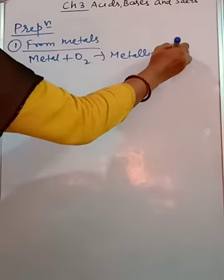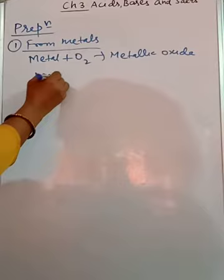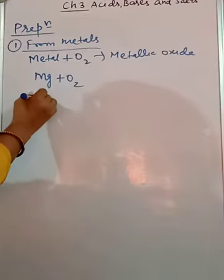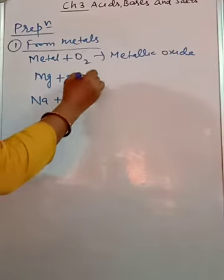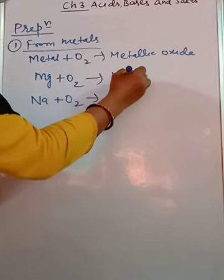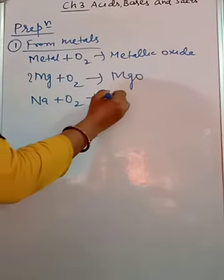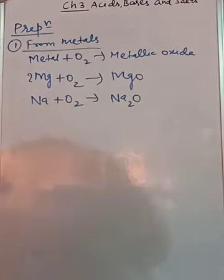Like 2Mg plus O2, 4Na plus O2. In return what we will get here: MgO, Na2O. And these metallic oxides are basic in nature.